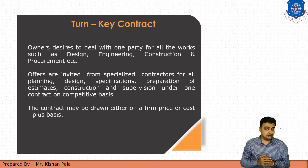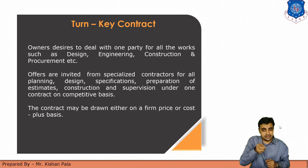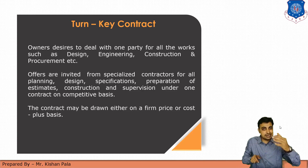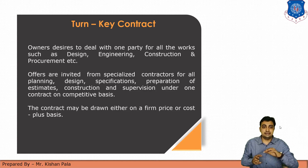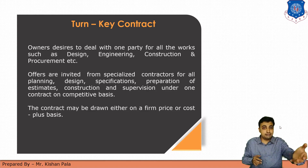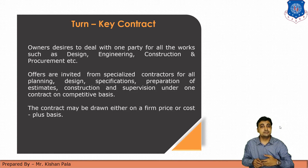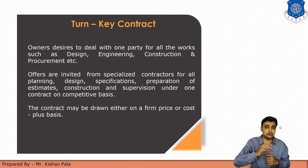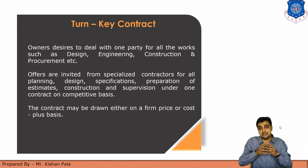The second type is the turnkey contract. As the name suggests, in a turnkey contract, the client offers all tasks to the contractor — including designing, engineering, construction, and procurement. If one party, the client, is offering all these responsibilities to the contractor, then the contract is considered a turnkey contract.